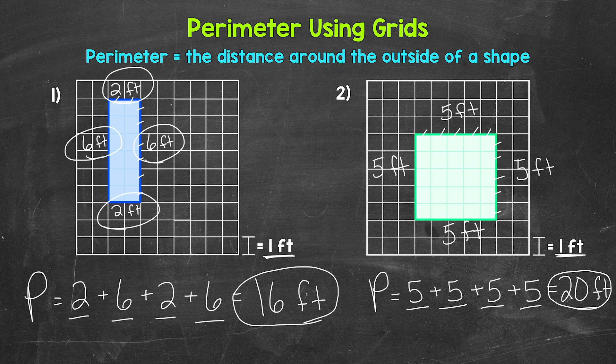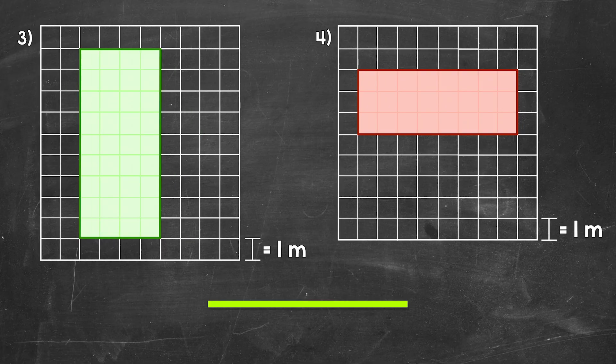Now let's move on to numbers three and four, and you're going to try these examples on your own. Find the perimeter of each rectangle by adding the side lengths — so have paper and pencil ready. We are working with meters for numbers three and four. You can either pause the video and work through these, or let the video play and I'll give you a minute and a half. Whenever you're ready, move ahead to the answers and check your work. Go ahead and start.